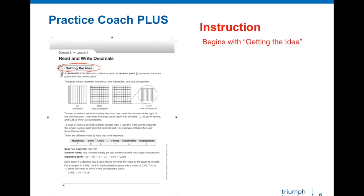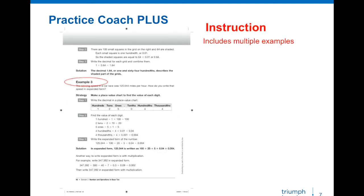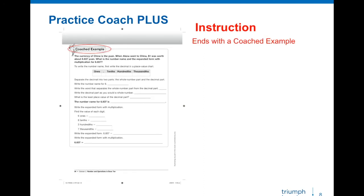Let's now go under the hood and look at how the instruction works. The instruction, which is in the getting the idea portion of the lesson, includes models and language. It also includes multiple examples, so you may have 4 or 5 examples within each lesson. Then we move to the coached example, which is the transition to practice. Notice that the coached example is set out so that each step of the process is stepped out — we do most of the structure and students fill in the steps.